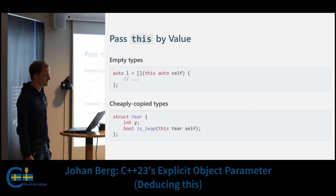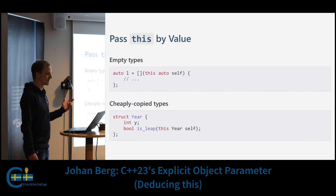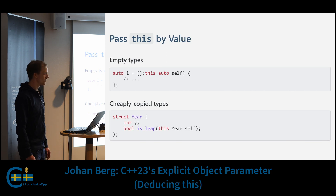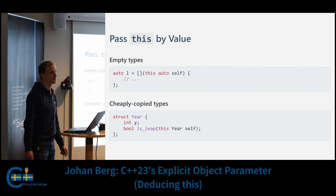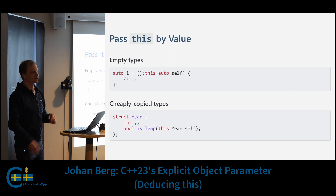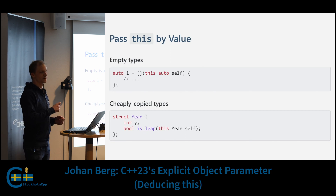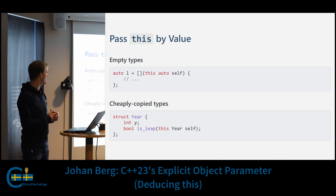Another new thing is we can pass 'this' by value. If we have an empty type like a stateless lambda, or a cheaply copied type like the class here that just wraps an integer, there's no reason we should have to store the object on the stack, load the address, and pass that when we call a function — we could just pass an integer directly in a register, or in the case of an empty type there's really nothing to do.